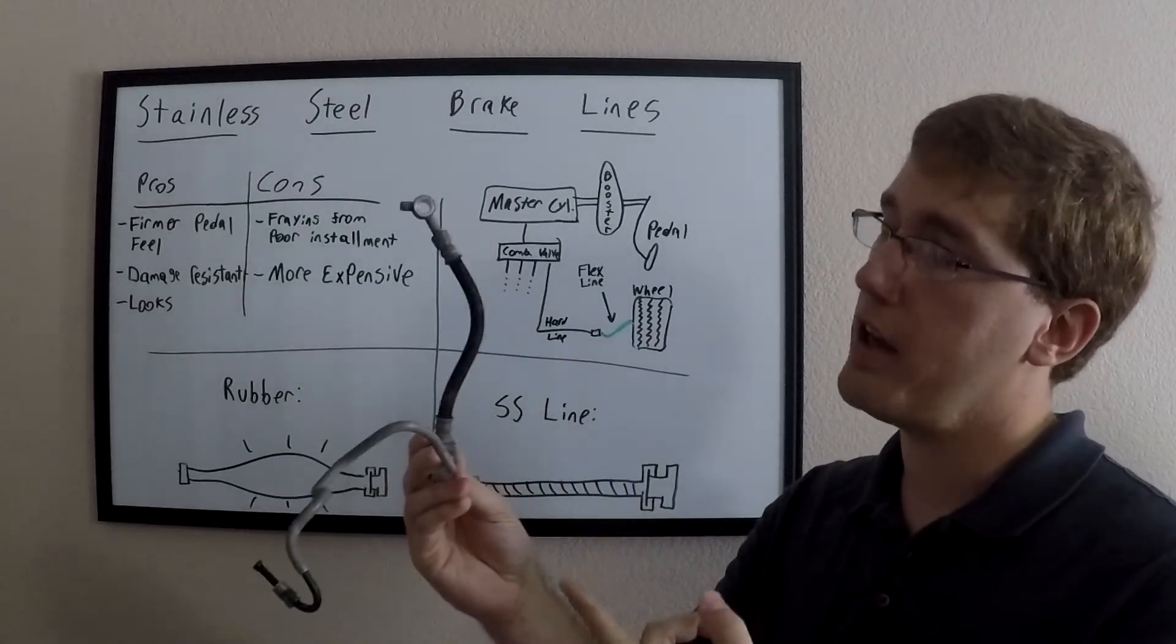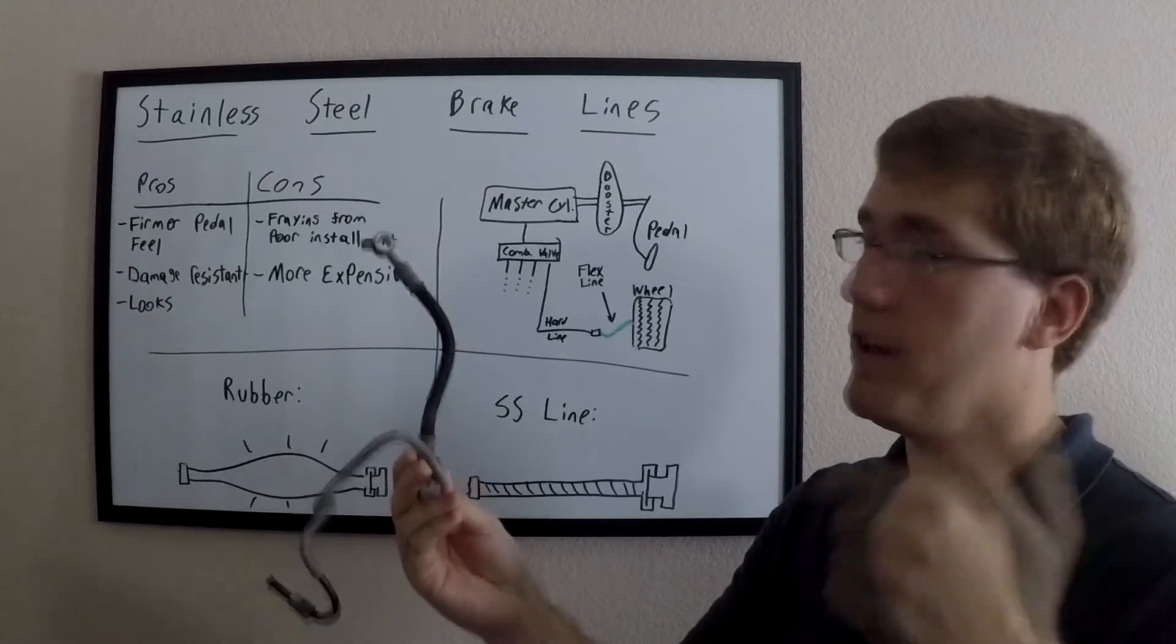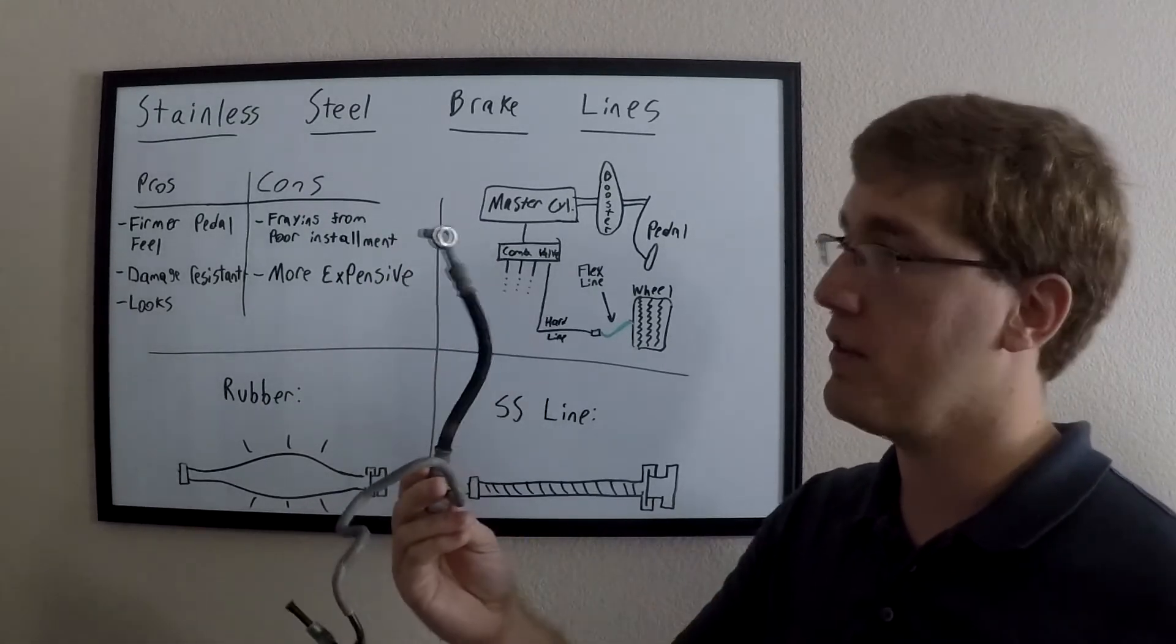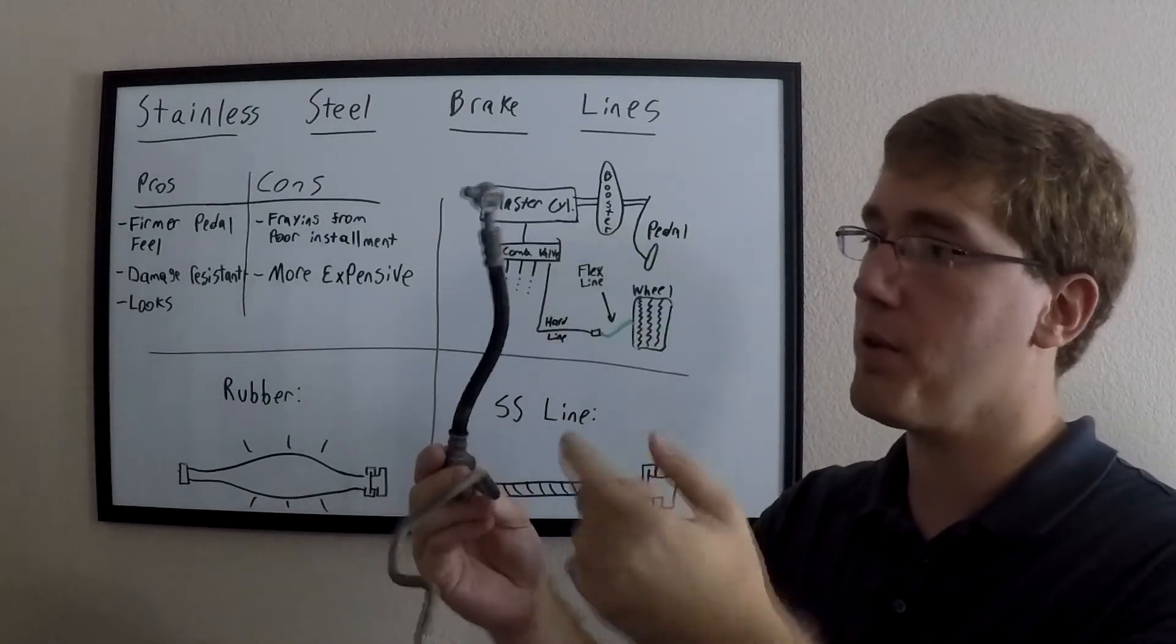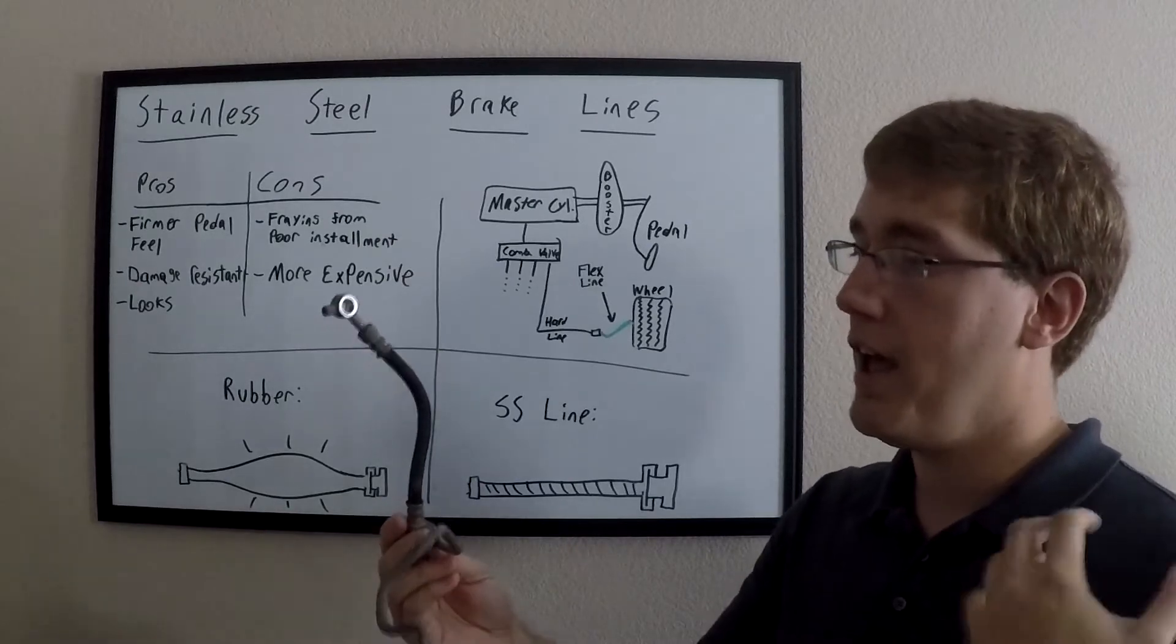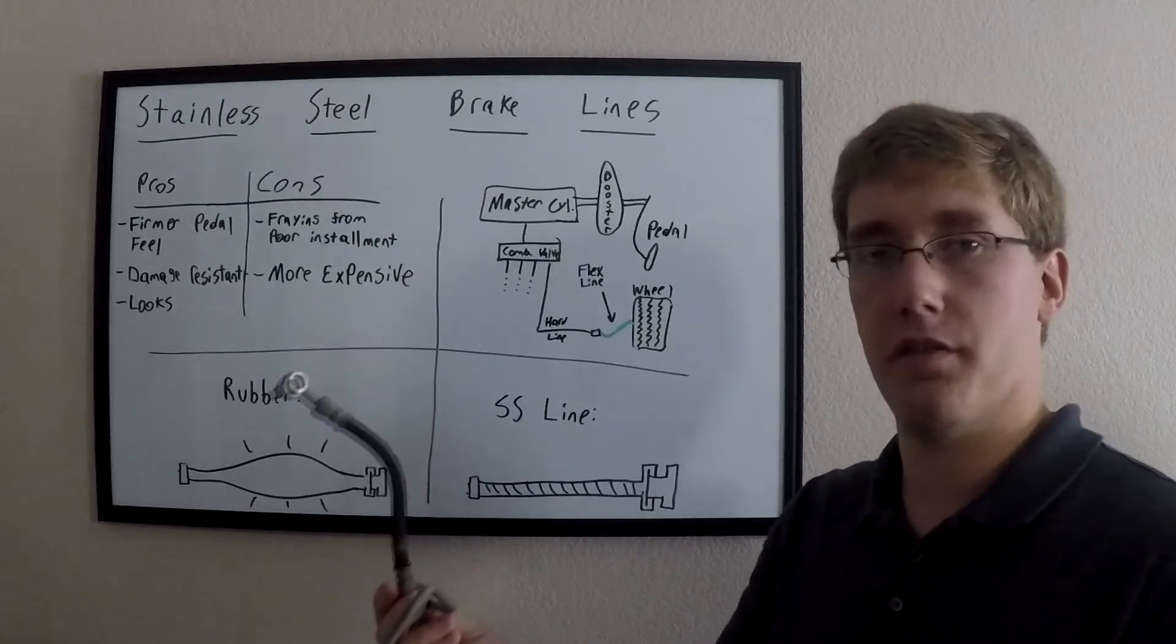This is the brake line from my 2016 Z. I'll leave a link in the description below to my install video of the stainless steel lines that I replaced this with. Normally the material is rubber from the factory because rubber is fairly cheap, it's flexible like it needs to be, and it holds the fluid just fine.